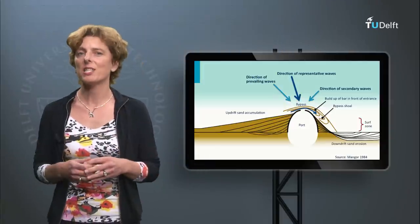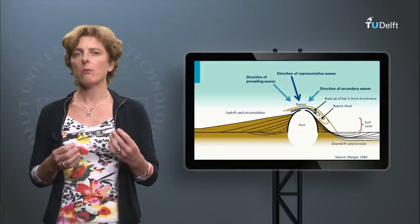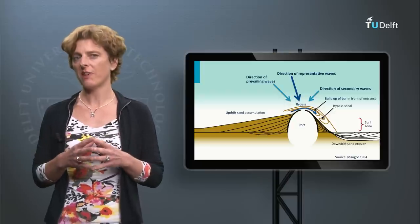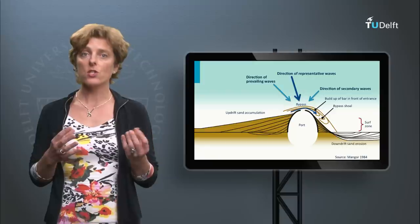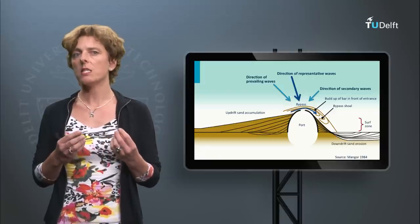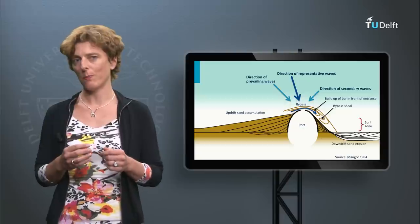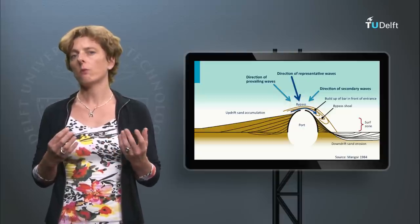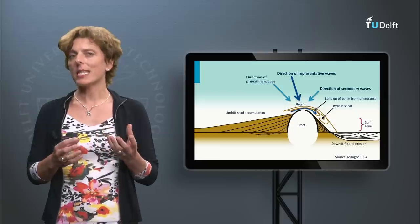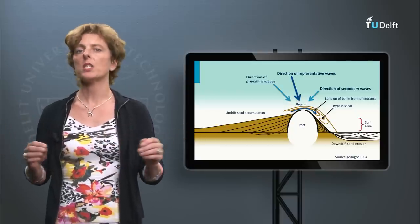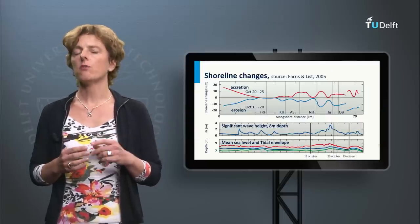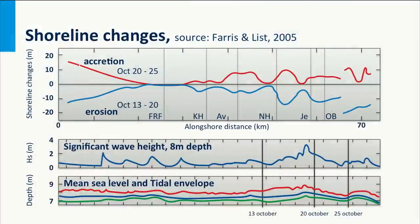Our second problem to be discussed is coastal squeeze. Coastal systems need to be able to absorb the temporary impact of an extreme event. This holds for mangrove coasts, but also for beach and dune systems that need space for retreat as a result of a storm. After the storm impact, the coastline will recover again. An example is given for an 80 km coastal stretch on the US East Coast, where the middle panel shows wave height variation in time. Around October 20th a storm occurred; the upper panel shows in blue the storm-induced shoreline erosion along the entire coast, and the recovery after the storm is indicated in red.